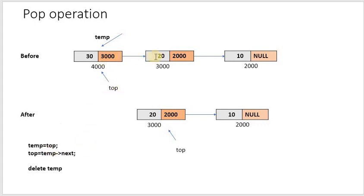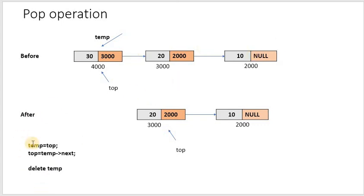When we say top is equal to temp->next, top is now referring to 3000. Now top is pointing to the node with value 20. Then we delete temp using 'delete temp'. So before you had 30, 20, 10, and after deleting you have 20 and 10, with top referring to 20 at address 2000. This is what happens in the pop operation.